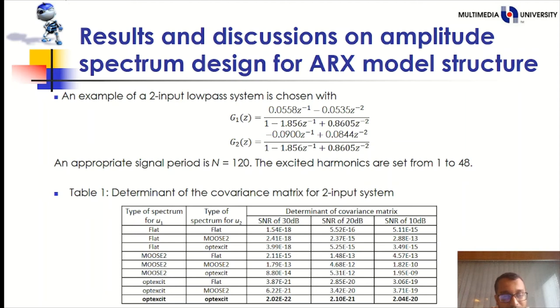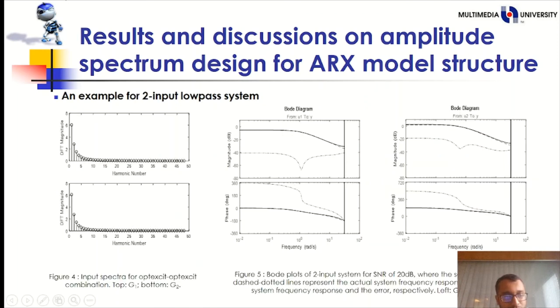We can see from this table, the combination of Optexcit signal provides the lower value for the determinant of covariance matrix. In this input spectra corresponding to the optimal design, combinations of the Optexcit design are plotted in figure 4. The input signal of the SISO system G1 and SISO system G2 all have largest magnitude at harmonic 1. This coincides with SISO system G1 having a peak at the same location. The corresponding Bode plots are shown in figure 5. In my right-hand side, for SNR of 20 dB, the magnitude of SISO system G1 has a lower error at low frequency compared to SISO system G2. The estimated and actual system are well matched for both systems.